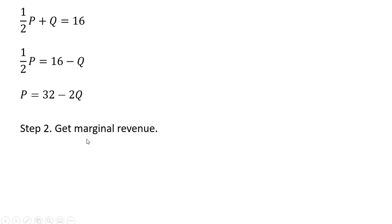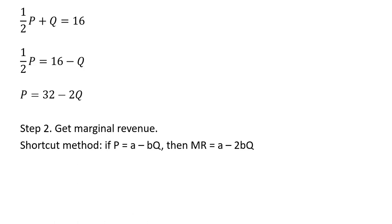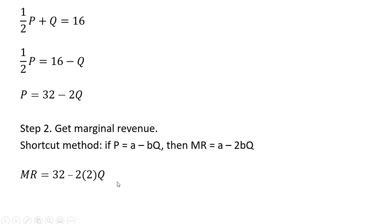Step two is to get marginal revenue, and we're going to use the shortcut method. If the price equation is given by P equals A minus BQ, marginal revenue will equal A minus 2 times BQ. In our example, A is 32 and B is 2, so marginal revenue simplifies down to 32 minus 4Q. Marginal revenue looks like the inverse market demand with a slope that is twice as steep.